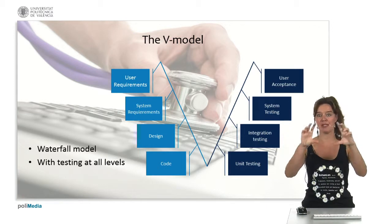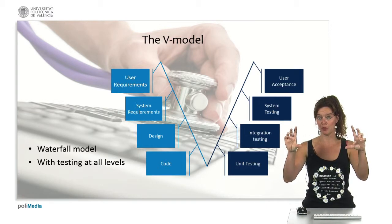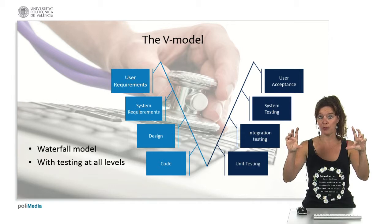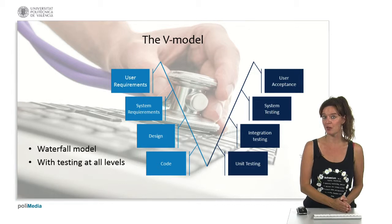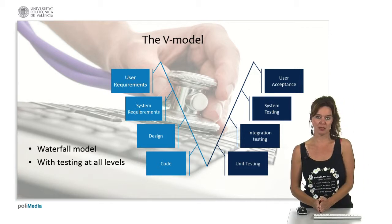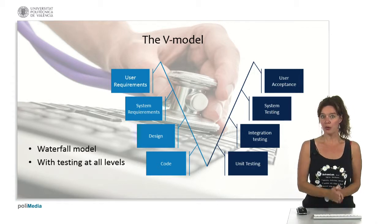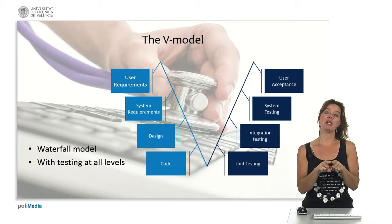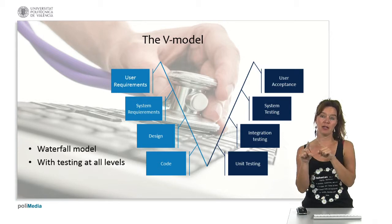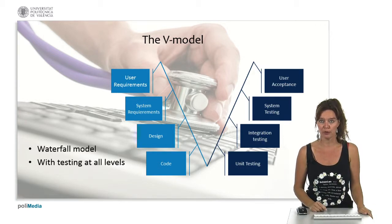Finally, using the system requirements that state what the system should do for the user, we do system testing. We have a whole system and we test the system from the system point of view. And then finally from the user requirements that state what the users need from the system, we do the user acceptance test. It's called the V model because it is a V because it has a software testing phase at each phase of the waterfall model.